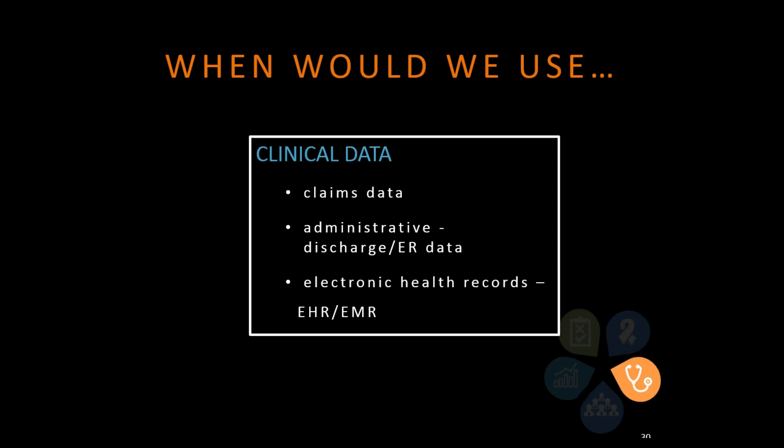Clinical data. This is the biggest bucket and what most of you ask for. The three biggest kinds of clinical data we described in part one were claims data — when an insurance company pays a bill related to what's been done at the doctor's office or in the hospital. Administrative or discharge data, which includes both in-hospital admissions as well as ER visits. And then electronic health records, which we really focus on as a data source from outpatient clinics.